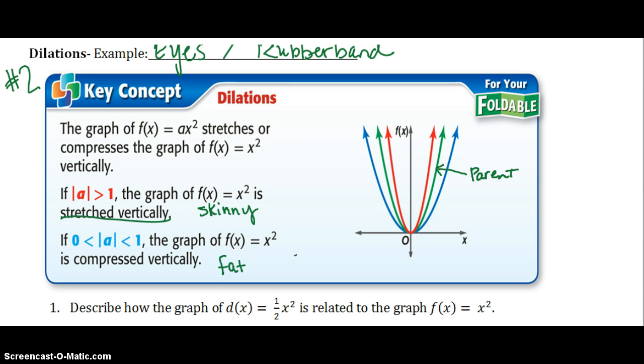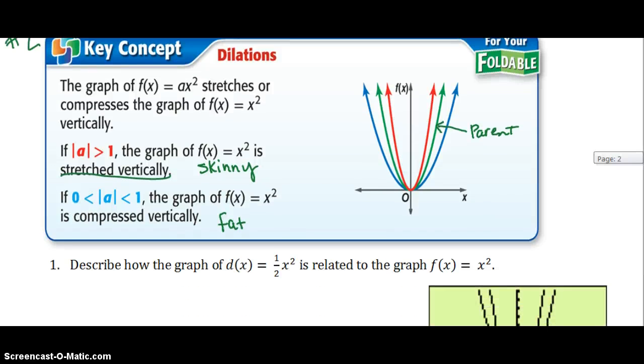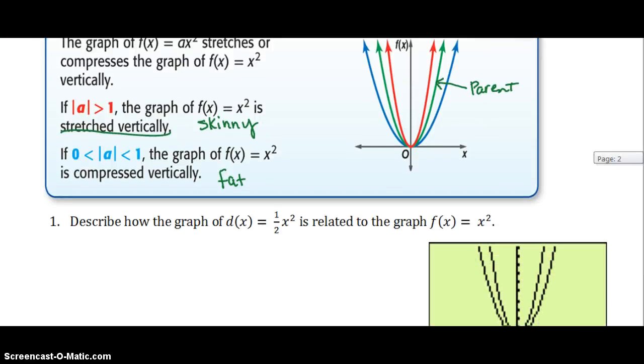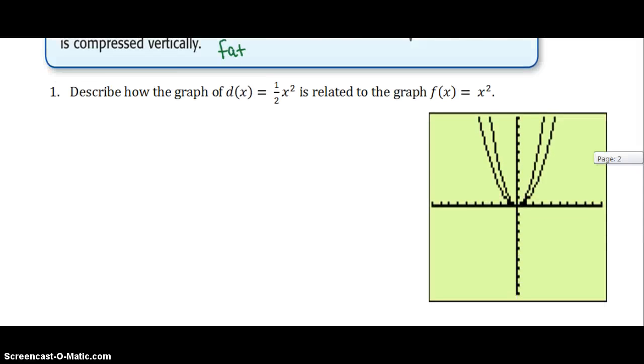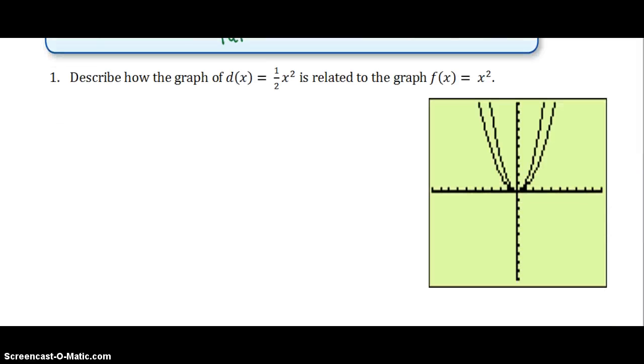The negative does not have anything to do with the dilation. The negative causes a reflection. So again, we're looking at the absolute value of a, not whether it's positive or negative. Our negative a still tells us whether we open up or whether we open down. I hope you're listening to this video and not just watching it, because that's some important information.